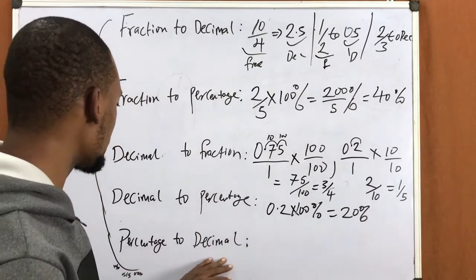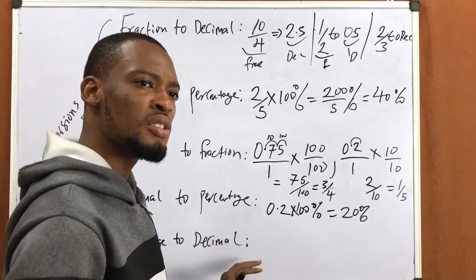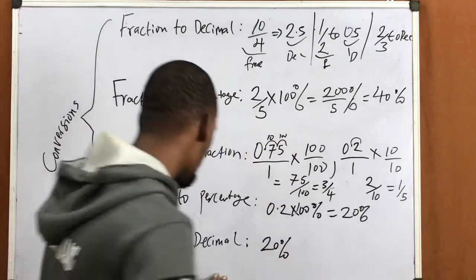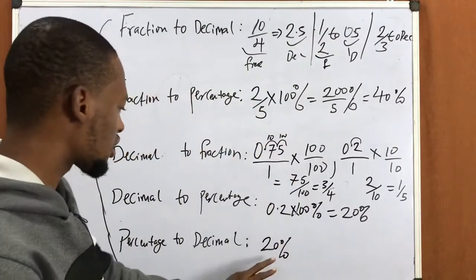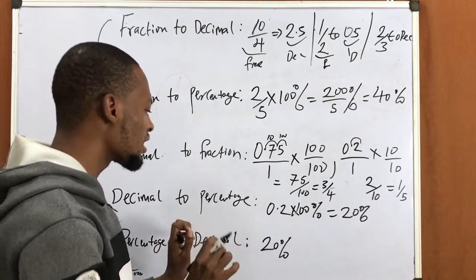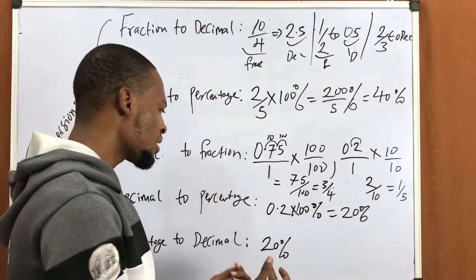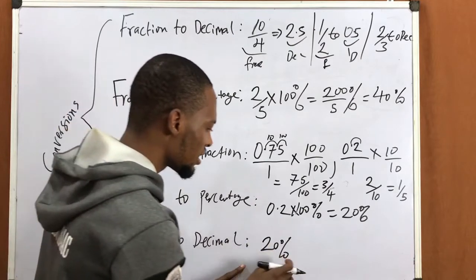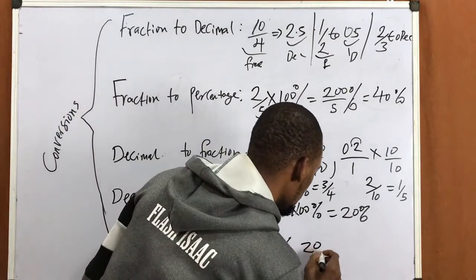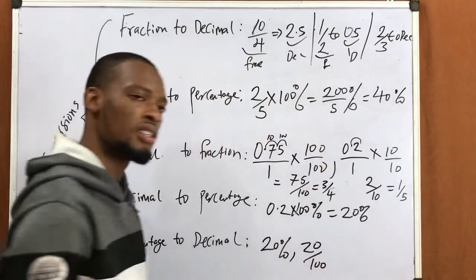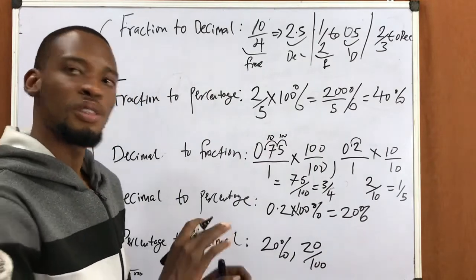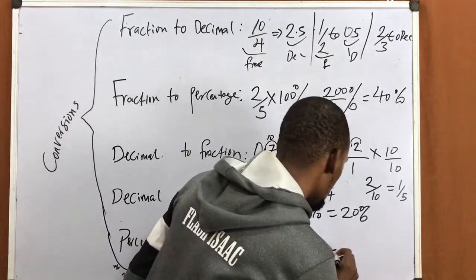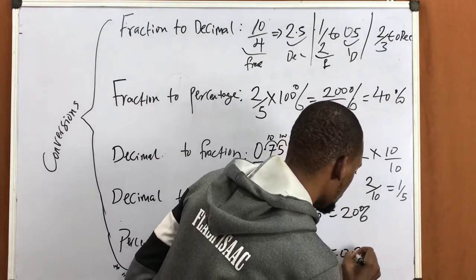To convert from percentage to decimal: if you are given 20%, I already told you that percentage means divided by 100. So 20% is the same as 20 divided by 100. Just divide it: 20 divided by 100 gives you 0.2.